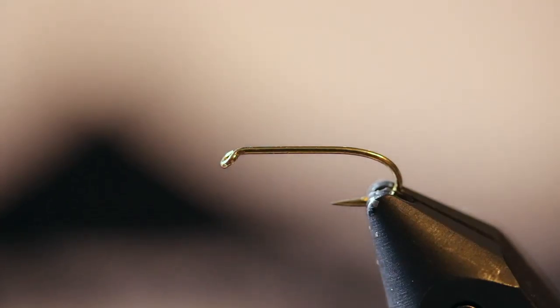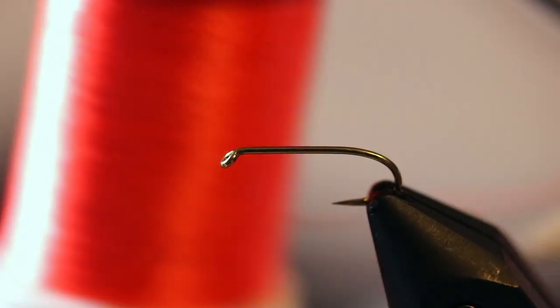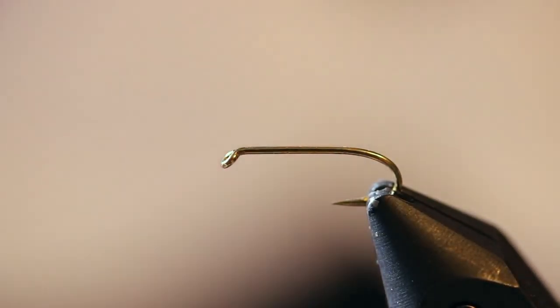For this we're going to be using size 6-aught fluorescent fire orange thread and a partridge feather.